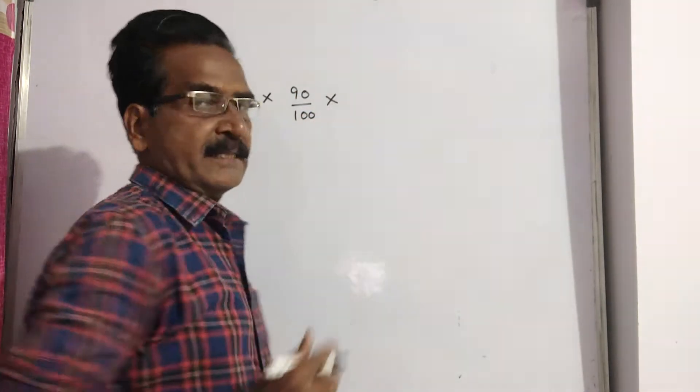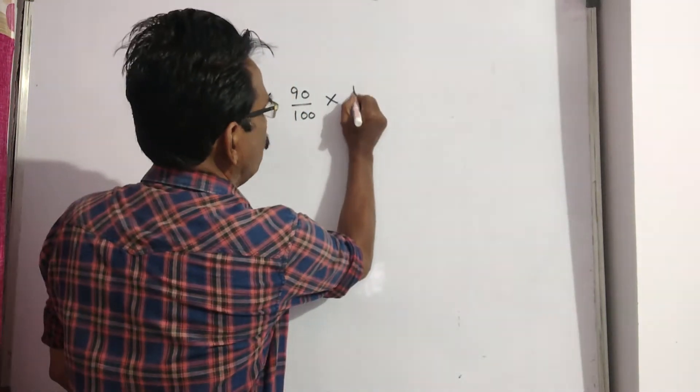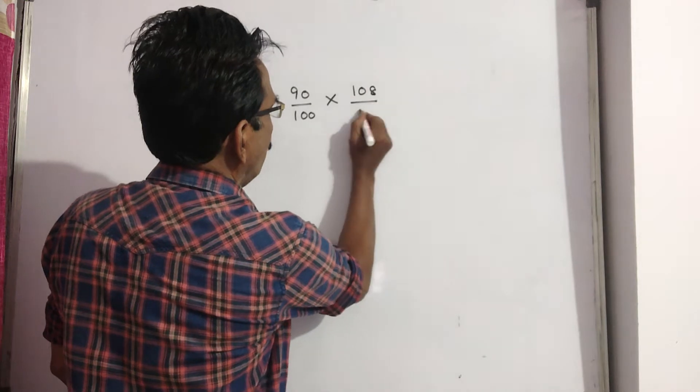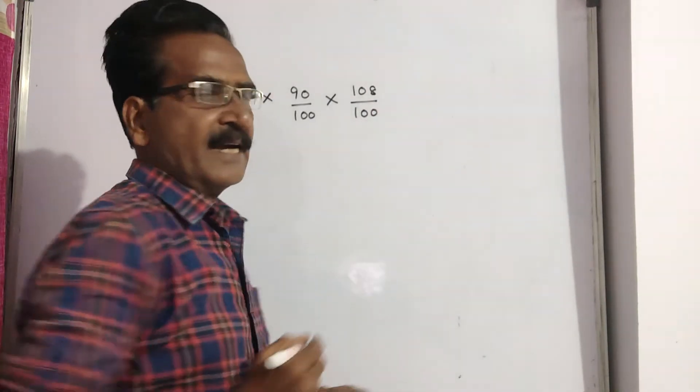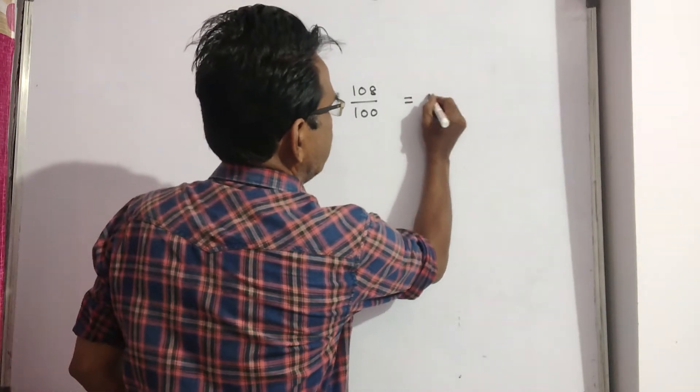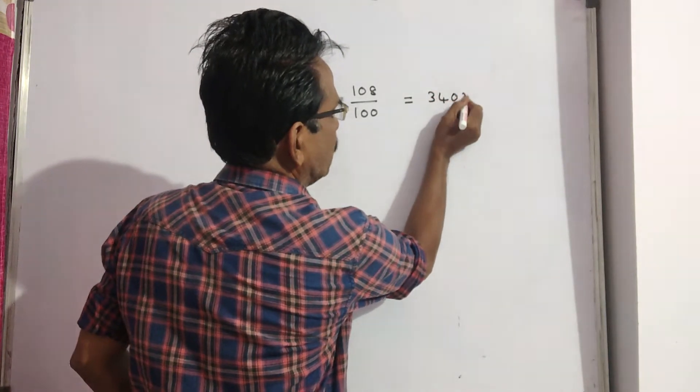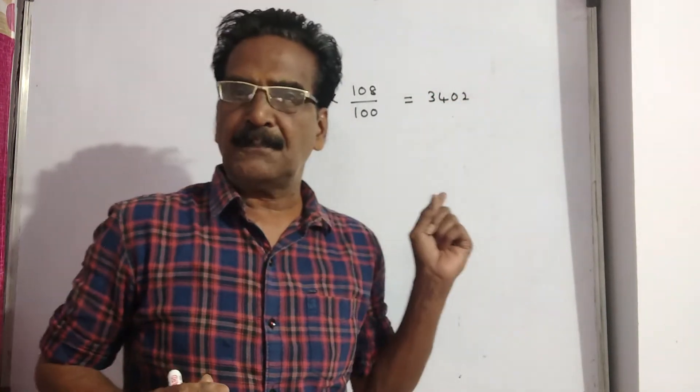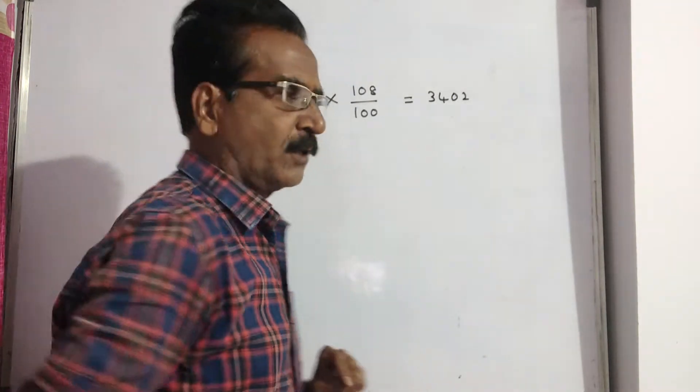Then 8 percent sales tax is charged, so the sold price becomes 108 by 100. And it is given that 3402 is what the customer pays. The customer pays 3402, which means the sold price of the article is 3402.